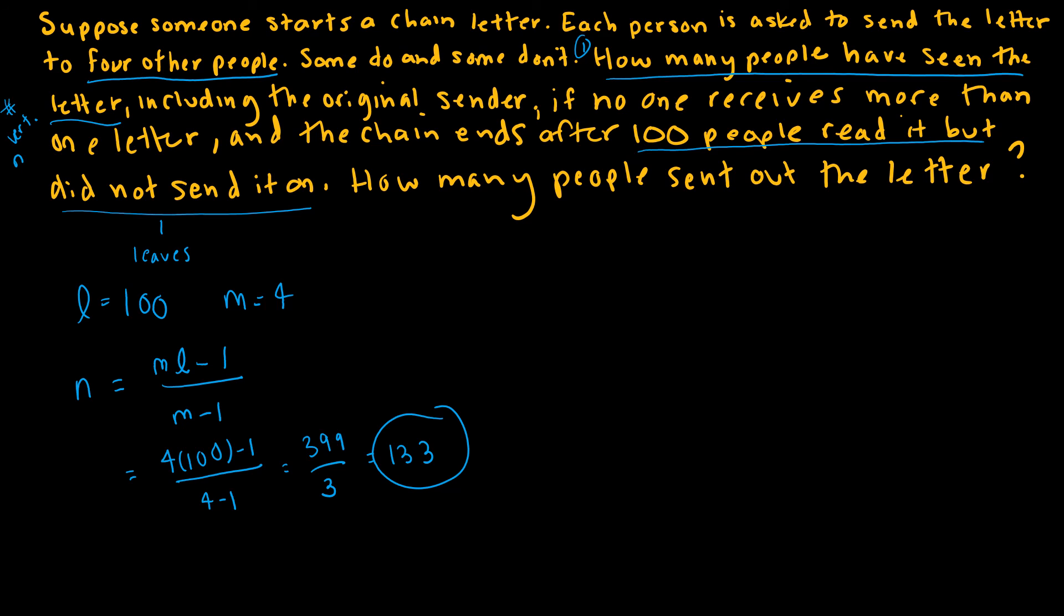To determine how many people sent out the letter, so question two. How many people sent out the letter? That means people who, in terms of the graph, have children. So this would be the number of internal vertices is what I'm trying to find. So again, I'm looking at that formula that says i equals L minus one over M minus one. I'm still using the same L and the same M. So L was 100. 100 minus one over M, which was four minus one, which gives me 99 divided by three, which gives me 33. So 33 people sent out the letter.